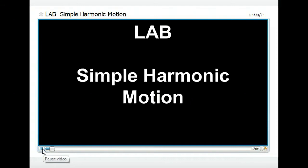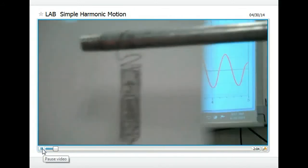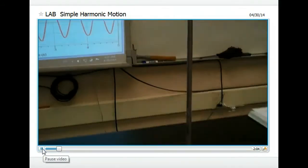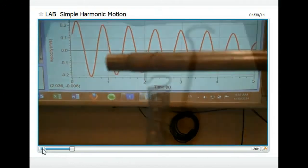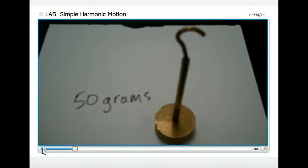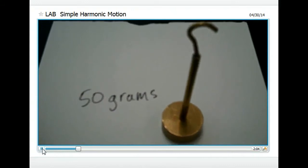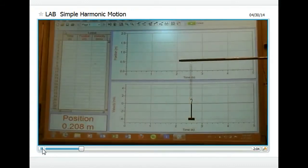For the first trial we're just going to hang from the spring a 50 gram mass over the motion detector. So there's the setup and we'll start off with a 50 gram mass. We're going to look at two different situations with the 50 gram mass.